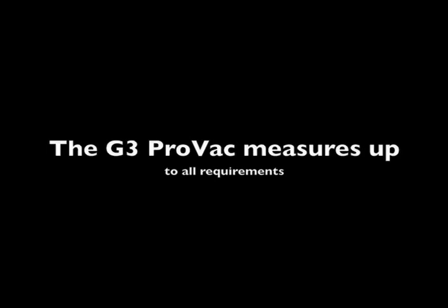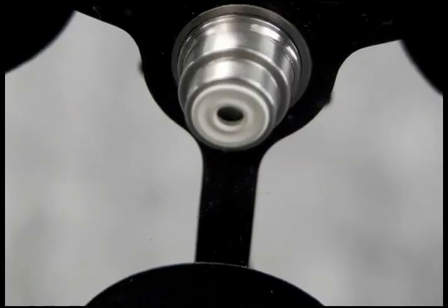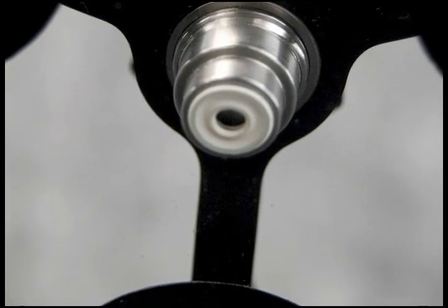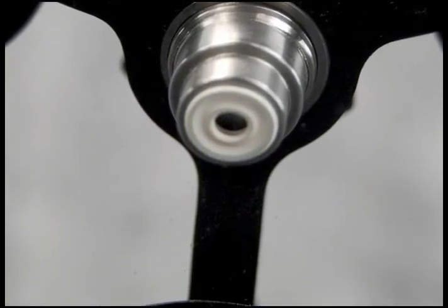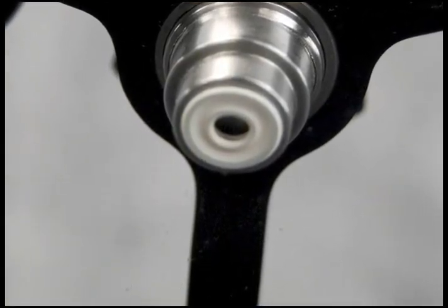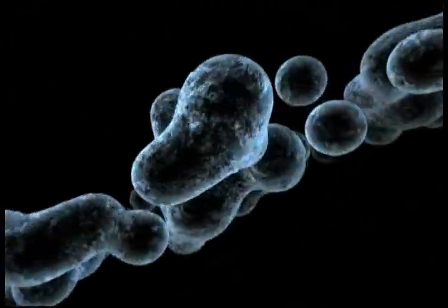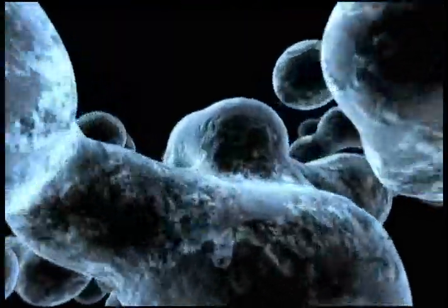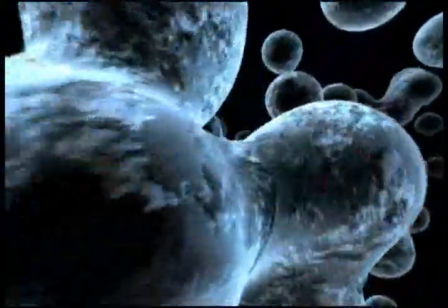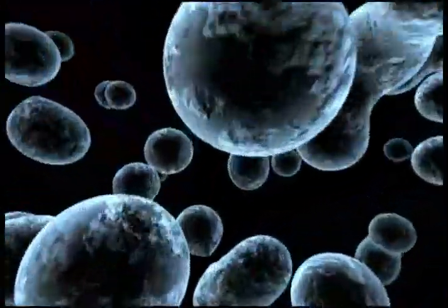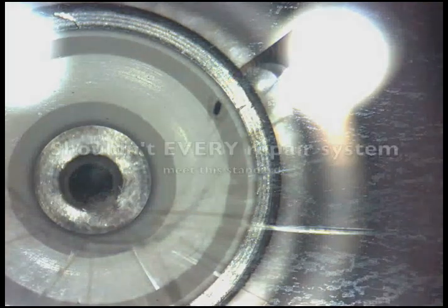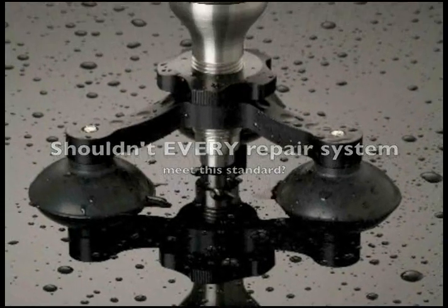The G3 ProVac injector conforms to all four requirements. It seals off the outside environment made up of oxygen and moisture from the damage. It completely removes the air from the damage. It completely removes moisture from the damage. And it completely fills the damage with resin. Every repair system should include an injector capable of such things. The G3 meets this standard.